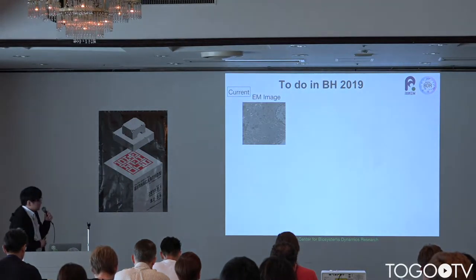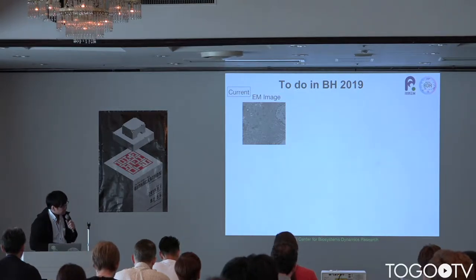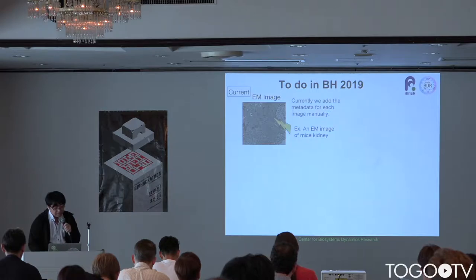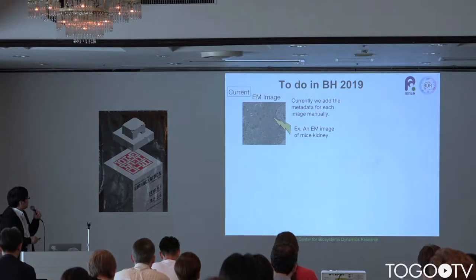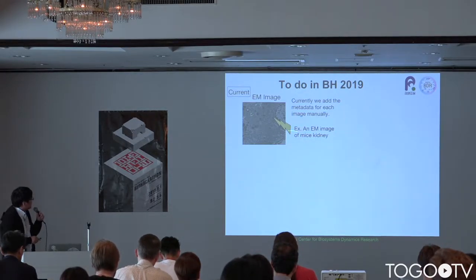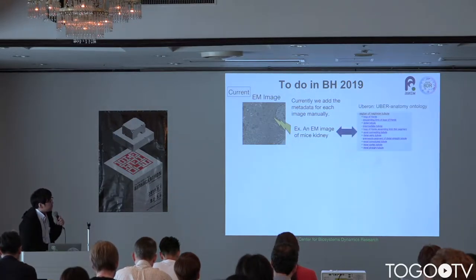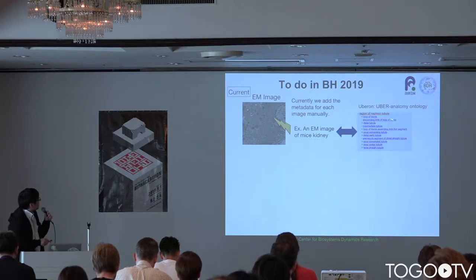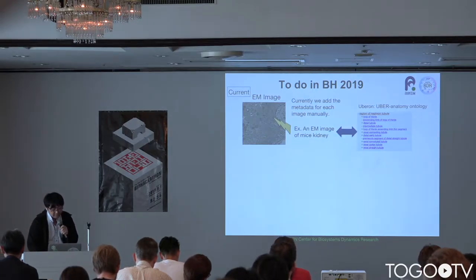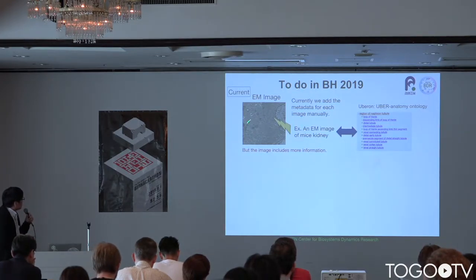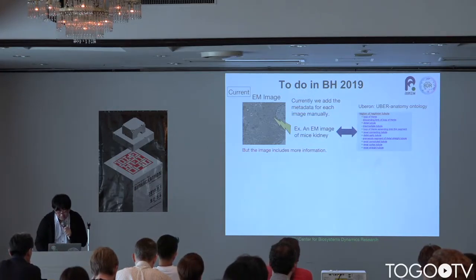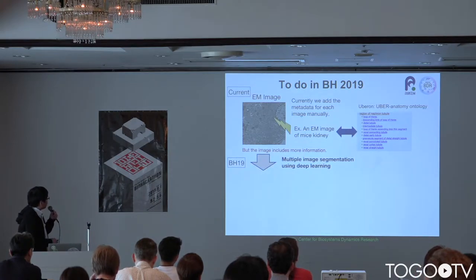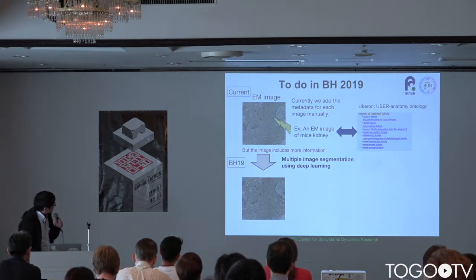In this BioHackathon, I tried this research plan. Currently, we add metadata for each image manually. For example, this is an EM image of a mice kidney, and it is linked to ontologies. But this image includes more information — such as nuclear shape and mitochondria number. So, in the BioHackathon, I tried multiple image segmentation using deep learning.